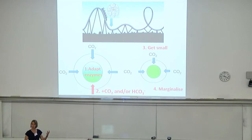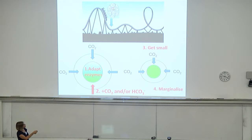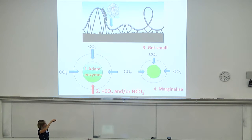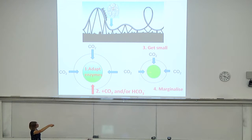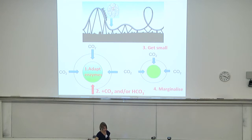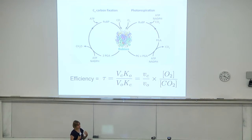As CO2 declined, there are several things a cell could do to boost its internal carbon dioxide. One is to adapt enzymes — I'll show rubisco data about how it has adapted to declining atmospheric CO2. Cells can also evolve carbon concentrating mechanisms, or CCMs, to boost intracellular CO2. Another option is to get smaller to increase the surface area to volume ratio, keeping the internal carbon pool full. Alternatively, if they can't keep up with declining CO2, they may become marginalized in specific locations like upwelling zones or polar regions.